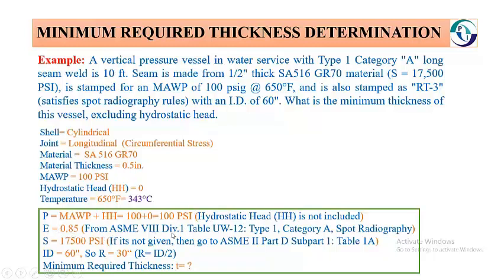E is 0.85 from ASME Section VIII Division 1 Table UW-12, Type 1, Category A, Spot Radiography. When you go to ASME Division 1 Table UW-12 with Type 1 Category A and Spot Radiography as the requirement, you will get E equal to 0.85. The S value given is 17,500 PSI; if not given, you would look it up in ASME Section II Part D Subpart 1 Table 1A. The inside diameter is 60 inches, so the radius R is 30 inches.